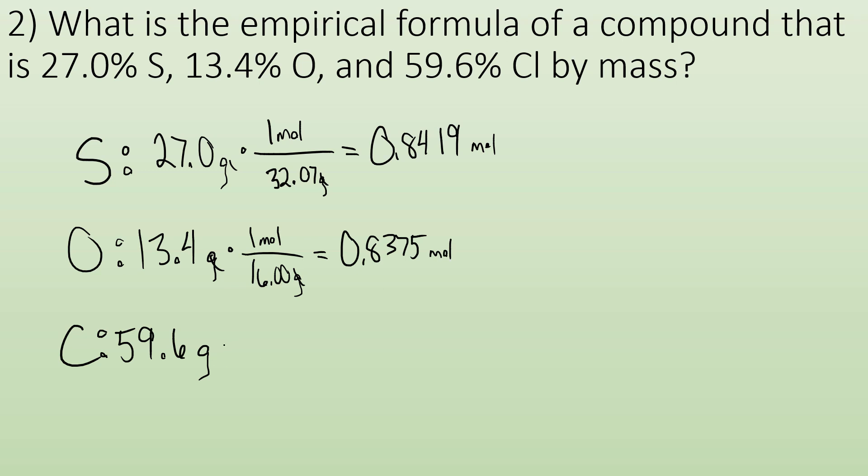Do the same process for oxygen. One mole of oxygen is 16.00 grams. Grams cancel out and I end up with 0.8375 moles. And then I do the same process, but for chlorine. One mole of chlorine is 35.45 grams. Grams cancel out, I plug and chug, and I get 1.68.